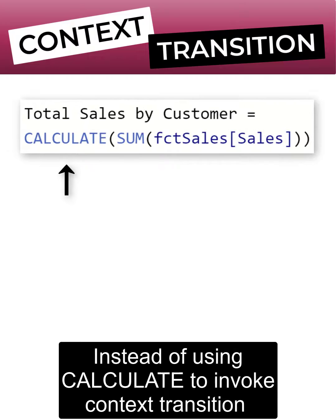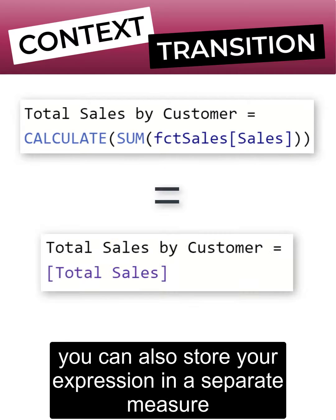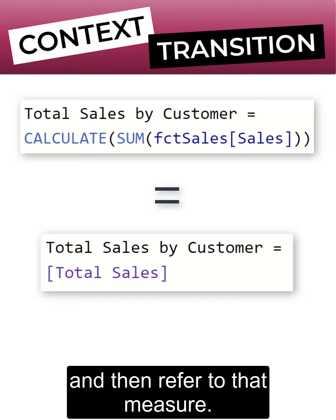Instead of using CALCULATE to invoke context transition, you can also store your expression in a separate measure, and then refer to that measure.